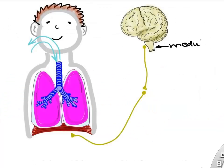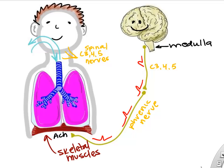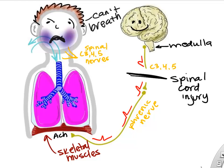Once the medulla decides to increase ventilation, it sends action potentials down peripheral nerves to our skeletal muscle diaphragm. These nerves originate from cervical spinal nerves C3, C4, and C5, which combine to make the phrenic nerve. Any spinal cord injury at the higher levels of our cervical spine can interrupt these signals — if interrupted, the diaphragm won't contract and you cannot breathe.